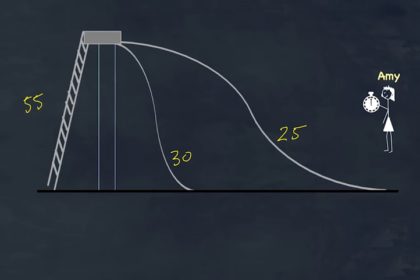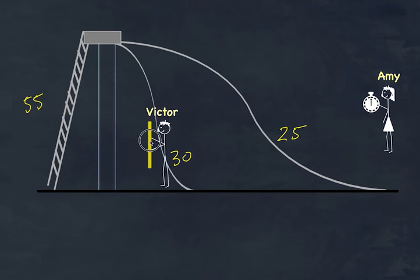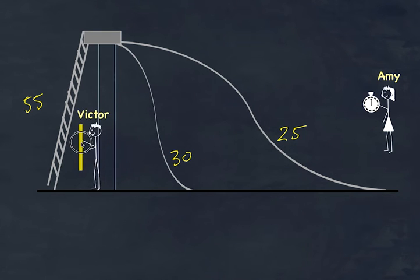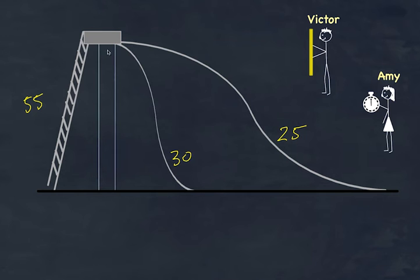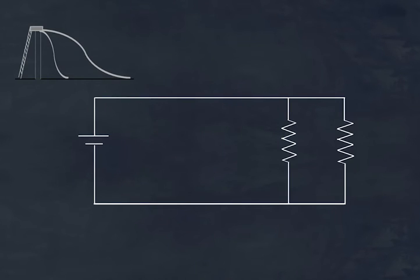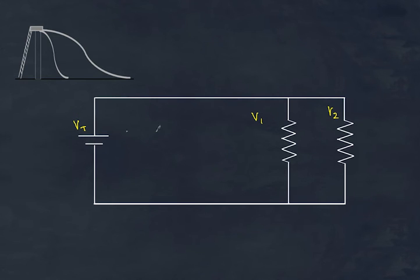Now for Victor in the parallel scenario — the height drop on each slide is the same as the total height gained. Victor discovers that whatever energy is gained equals the energy lost on each individual slide. Translating to a parallel circuit: we have a voltage supply V_total, and the voltage drop V1 across one resistor and V2 across the other. These three values must remain the same — for a parallel circuit, the voltage remains constant.